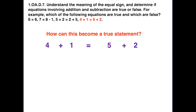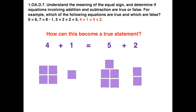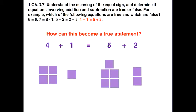Again, a good extension is to take a false statement and ask students how to make it true. Some students might take away two from the right-hand side, leaving 3 plus 2 instead of 5 plus 2 — now both sides equal 5, so it's a true statement. Other students might work on the left-hand side and add two, changing 4 plus 1 to 4 plus 3, which equals 7. Now it's a true statement because we have 7 on both sides of the equal sign.